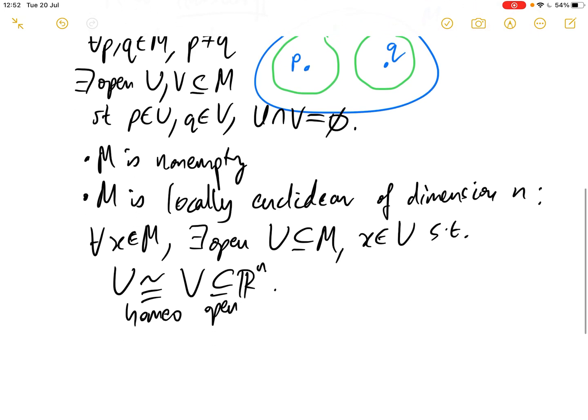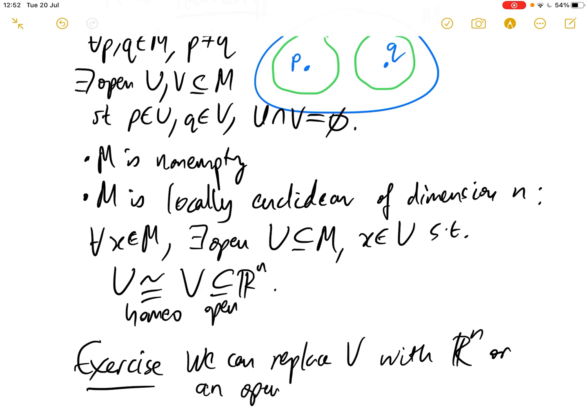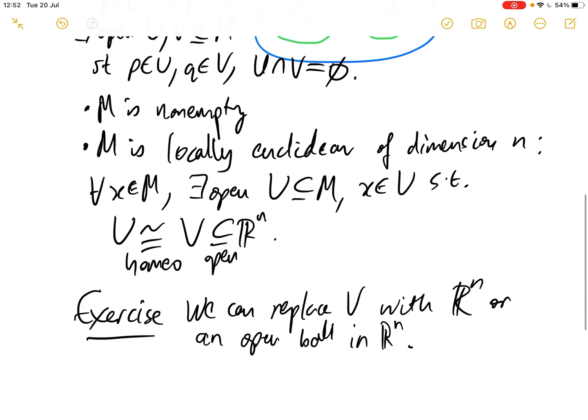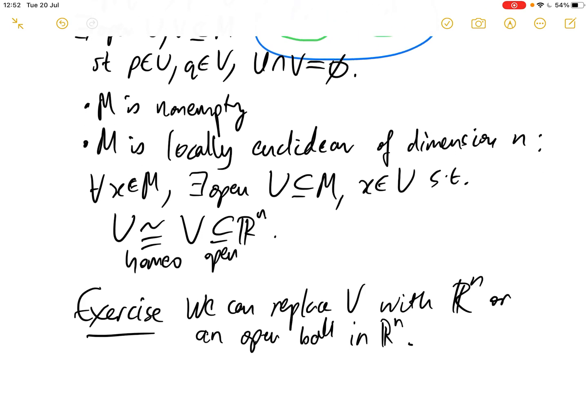And you can check - a nice exercise is to check that we can replace V with either R^n itself or an open ball in R^n, and then the definition is still equivalent. So that's a nice exercise to check that we've got a few equivalent definitions of what it means to be a topological manifold.